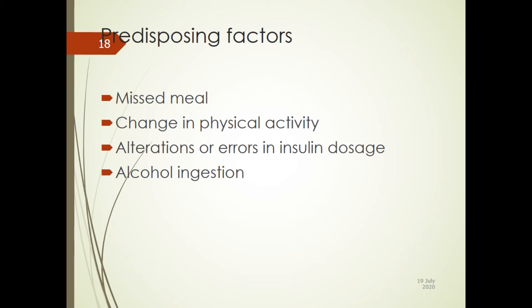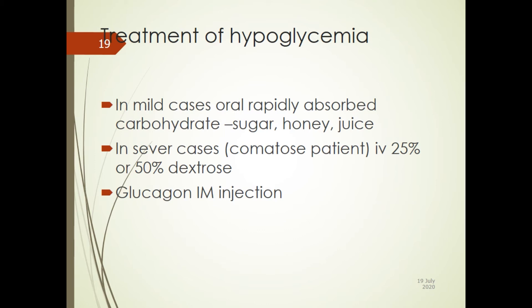Alcohol ingestion can also predispose to hypoglycemia, since alcohol decreases glucose levels. When managing a patient presenting with coma, first perform a random blood sugar to determine whether it is hypoglycemia or hyperglycemia. In mild cases, give rapidly absorbed carbohydrates such as sugar, honey, juice, or milk. In severe or comatose cases, give 25% or 50% dextrose IV, or an IM glucagon injection.